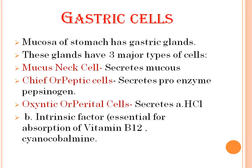Next topic is gastric cells. The mucosa of the stomach has gastric glands, which have three major types of cells. First are mucus neck cells, which secrete mucus. Second are chief or peptic cells, which secrete the proenzyme pepsinogen. Pepsinogen is converted into the active enzyme pepsin with the help of HCl. Pepsin is a protein-digesting enzyme in the stomach that converts protein into peptone and proteoses.